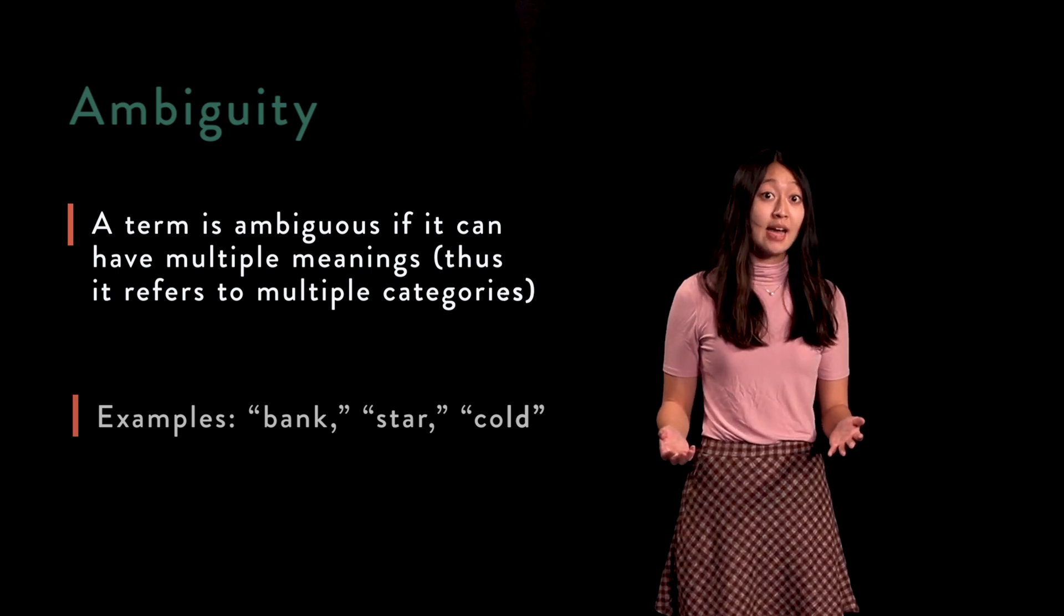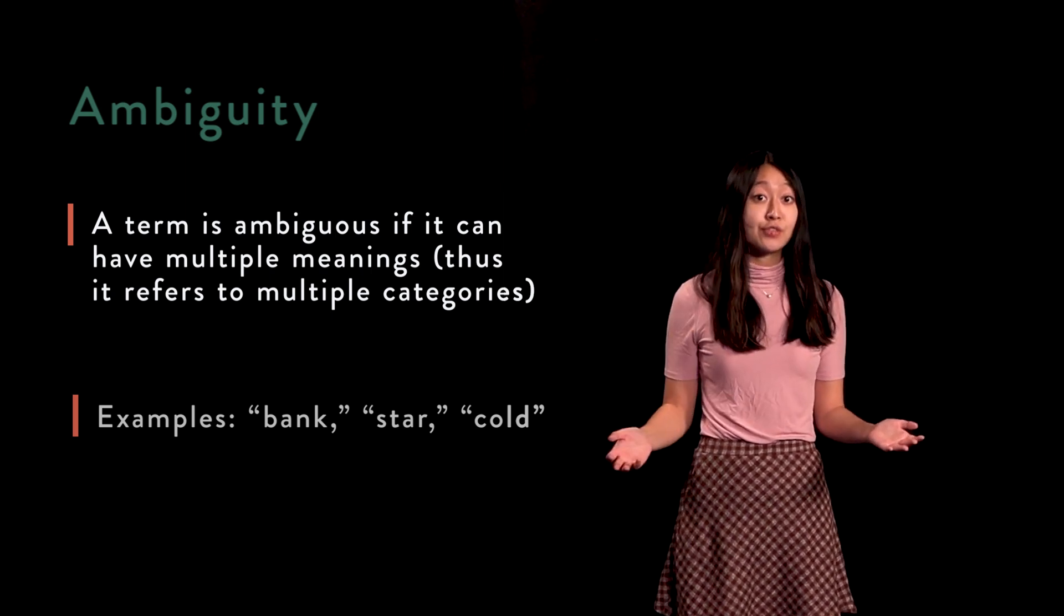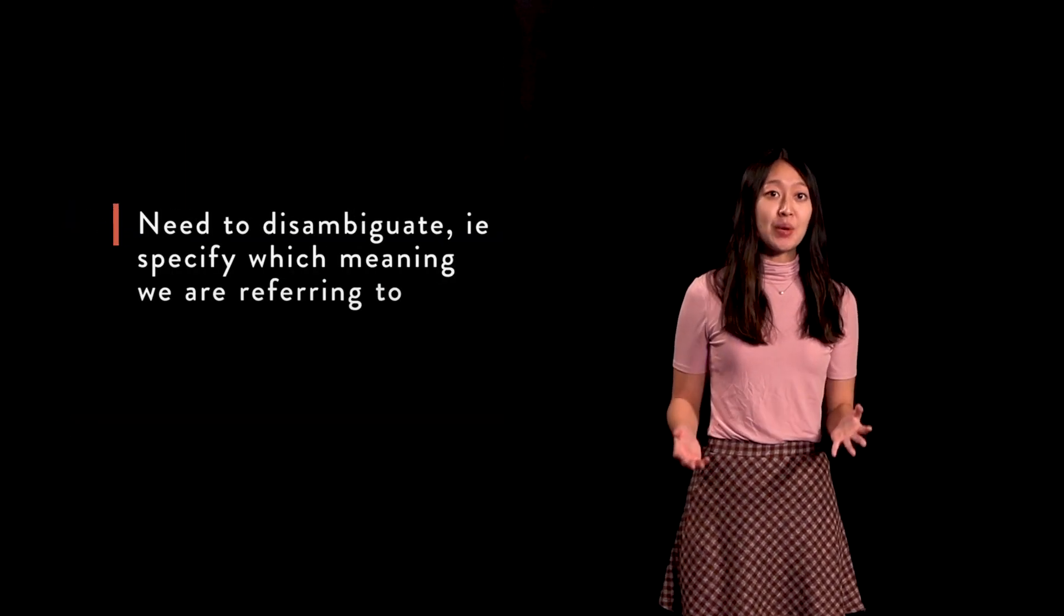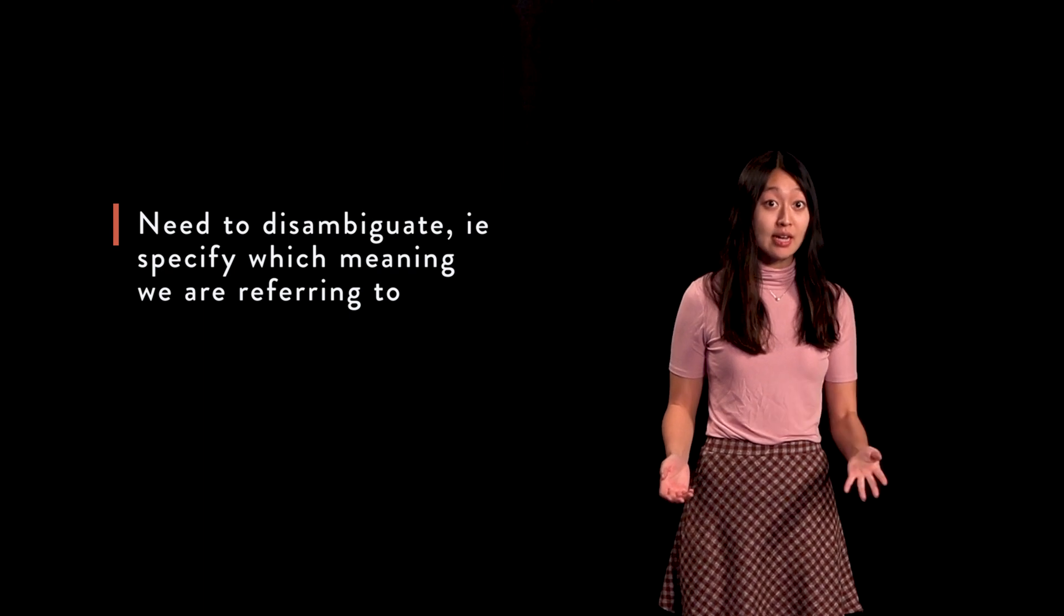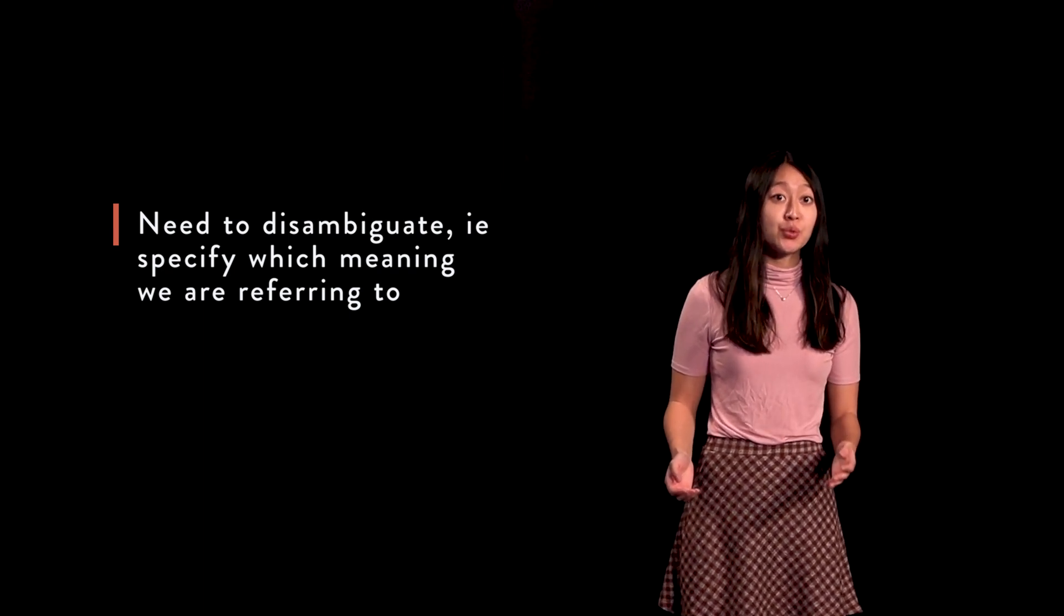For example, star could refer to a category of celestial bodies we call stars or to a category of actors famous enough that we call them stars. These terms need to be disambiguated. We need to specify which meaning we want to use in a logical context. Only when we know what the word refers to can we evaluate the truth of various sentences.